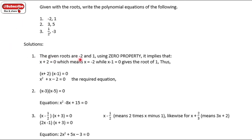Given the roots are negative 2 and 1, using the zero property, it implies that x plus 2 is equal to 0. When you transpose it, x equals negative 2. So the given root negative 2 becomes positive in the factor, and positive root 1 becomes negative. The roots negative 2 and positive 1 form the equation factors x plus 2 and x minus 1, which you then multiply to generate the polynomial equation.